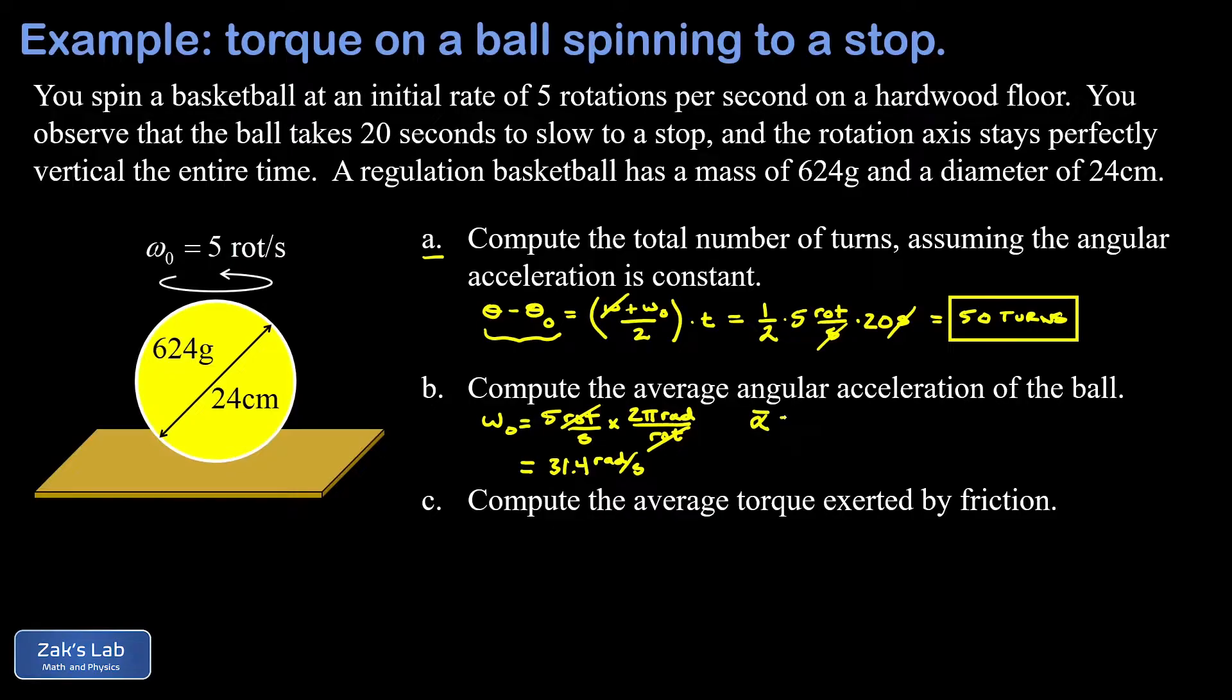Now to find the angular acceleration, that's just the average rate of change in the angular velocity, so we can write that as Δω over Δt. We know our final angular velocity is zero, and that means the change in angular velocity for this process is actually just 31.4 radians per second.